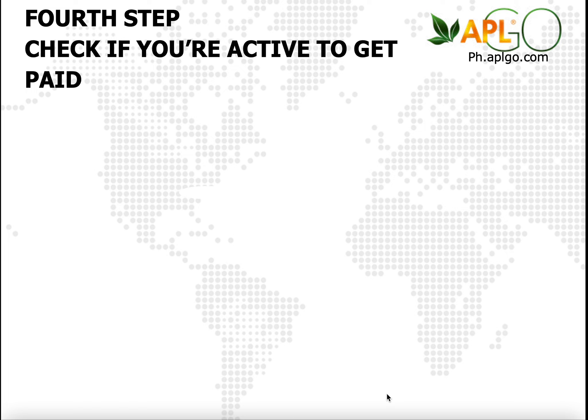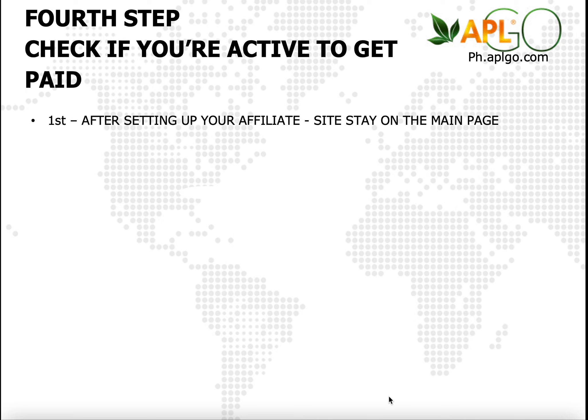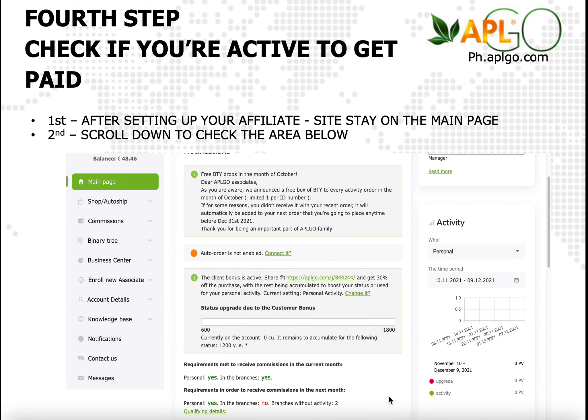Now we're on our fourth step. Now that you have done your PV maintenance and you're able to check if your downlines or personally enrolled are able to do their PV maintenance, we just want to make sure that it is reflected in the system. The first thing you need to do after setting up your affiliate site — on the main page, you stay on the main page and then you scroll down to check this specific area below.